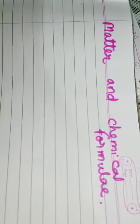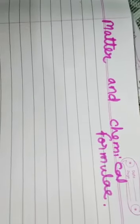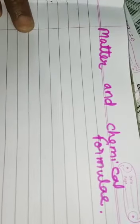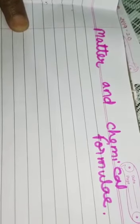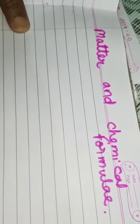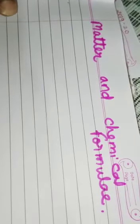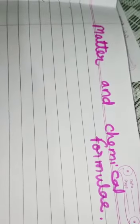Good morning students. Today we are going to study our first chapter of chemistry, matter and chemical formulae. Here we will discuss the following topics: atoms and molecules, elements compounds and mixture, chemical symbol and chemical formula, atomicity and valency, and chemical equations. So let us start.